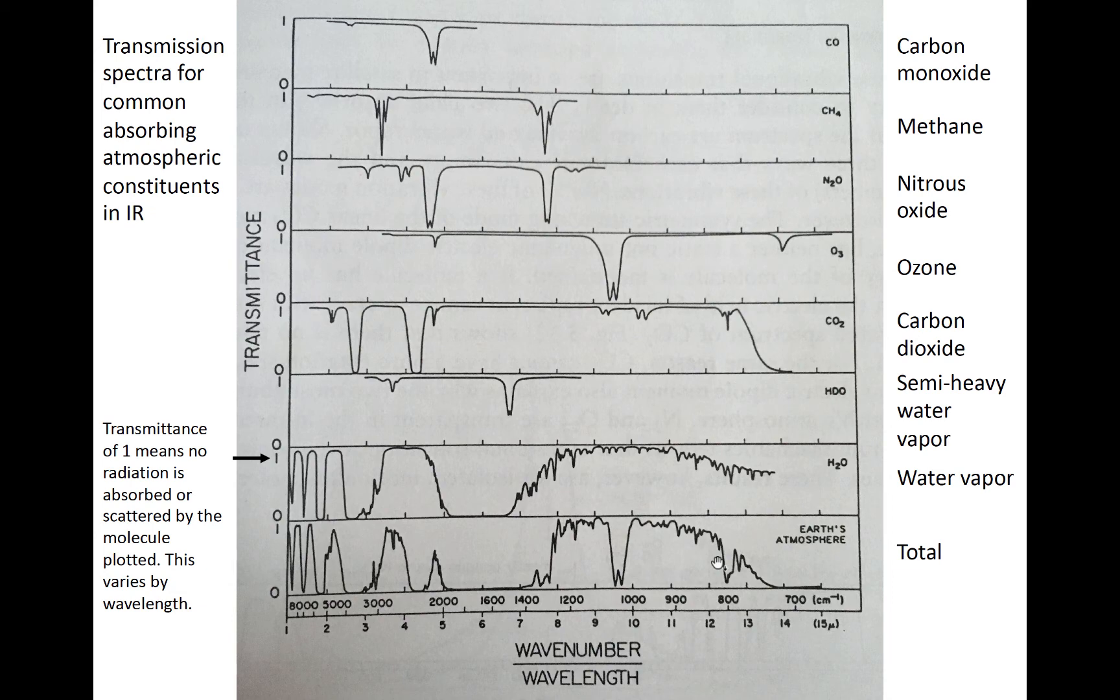However, you can see some bands at which molecules other than water vapor are particularly important. For example, water vapor allows 9.5 micron radiation to pass, but ozone does not. This means that the atmospheric window spanning approximately 8 to 12 microns excludes the narrow ozone band.